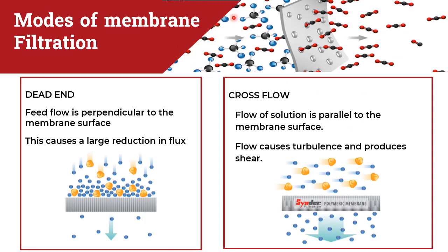The modes of membrane filtration are two types: dead-end and cross-flow. In dead-end filtration, the feed flow is perpendicular to the membrane surface. In cross-flow filtration, the flow of solution is parallel to the membrane surface. Dead-end filtration causes a large reduction in flux, as the perpendicular feed flow reduces permeate efficiency. Cross-flow causes turbulence and produces shear, which gives efficient filtration. The solvent permeated in cross-flow is significantly more compared to dead-end filtration.